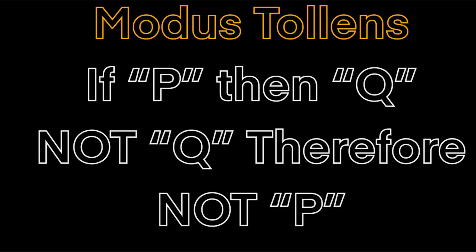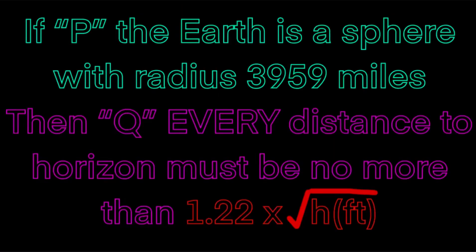So let's put this observation through modus tollens: If P then Q. Not Q, therefore not P. If P — the earth is a sphere with radius 39.59 miles — then Q: every distance to the horizon must be no more than 1.22 times the square root of the observer's height in feet.